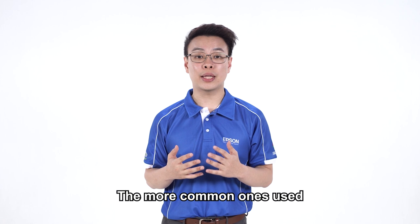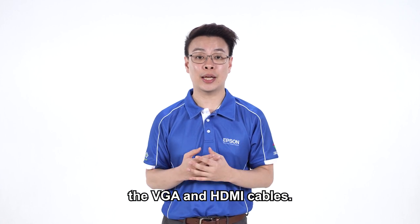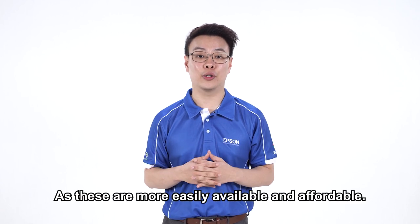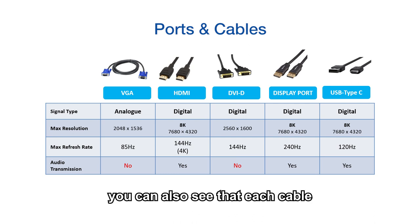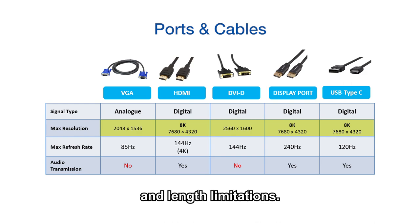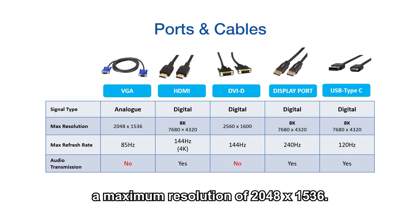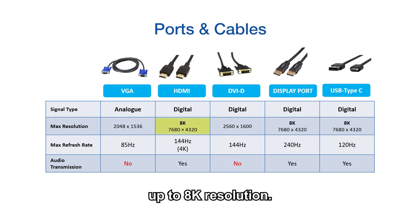The more common ones used and found on projectors are mainly the VGA and HDMI cables, as these are more easily available and affordable. Based on the chart, you can also see that each cable has different resolution and length limitations. For example, the VGA cable is only able to transmit a maximum resolution of 2048x1536, however a HDMI cable can actually support up to 8K resolution.